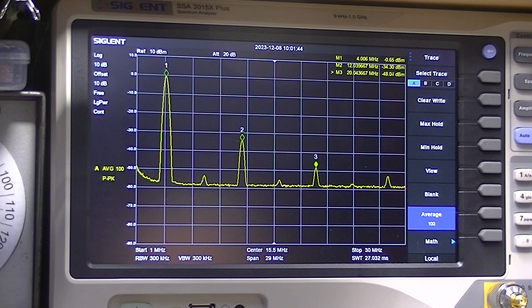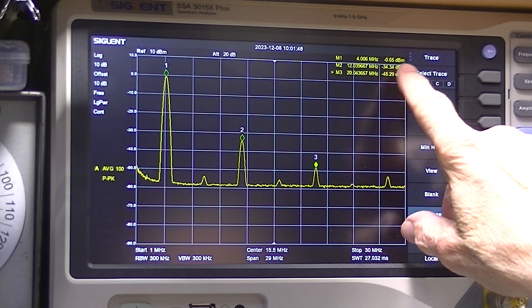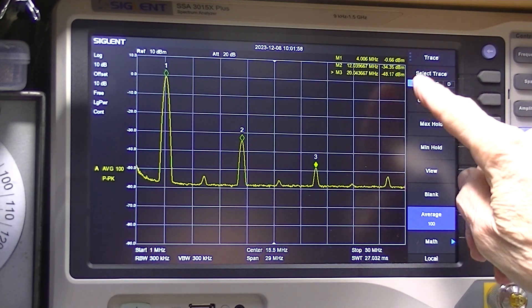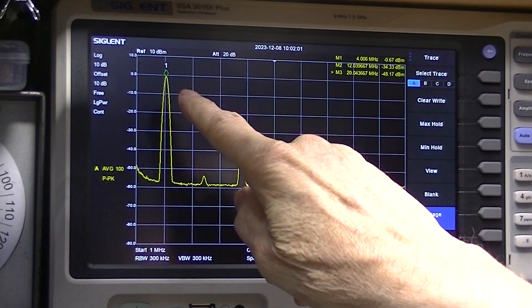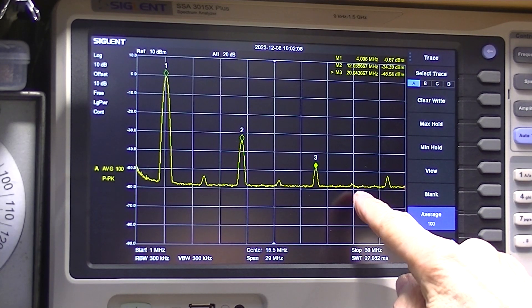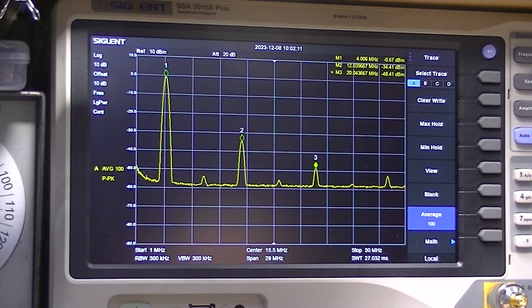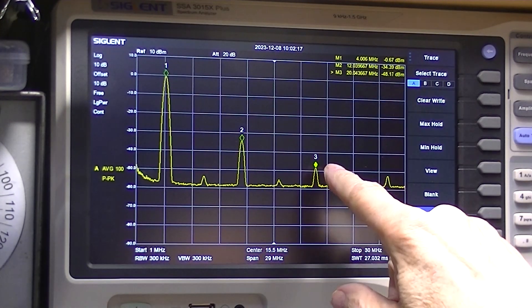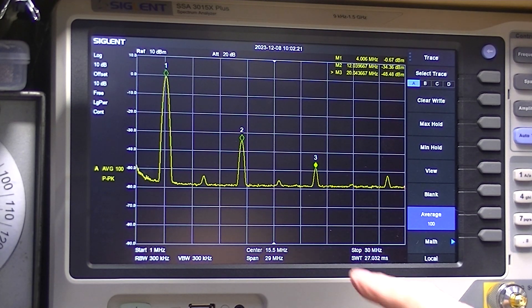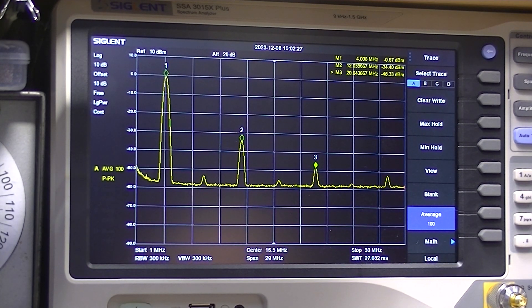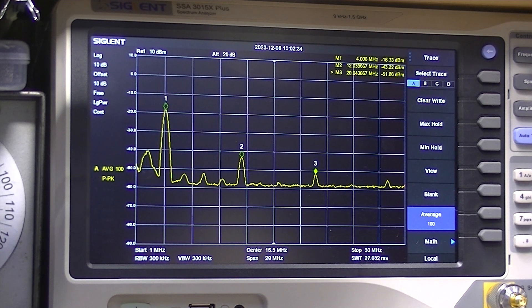I've got the output of the generator set for 4 megahertz. You can see marker one is at 4 megahertz and it's down about minus a half a dB, but for all practical purposes it's 0 dB. Here's the 2nd, 3rd, 4th, 5th, 6th, 7th harmonic. This is 4 megahertz and this is 20 megahertz. You can see the 3rd harmonic is down at minus 30 dB, 35 dB. Changed it to 2 megahertz.